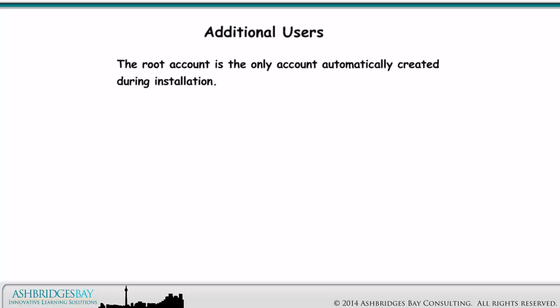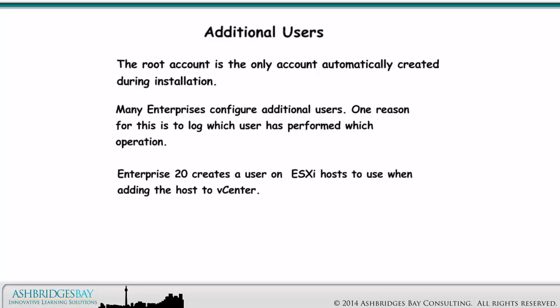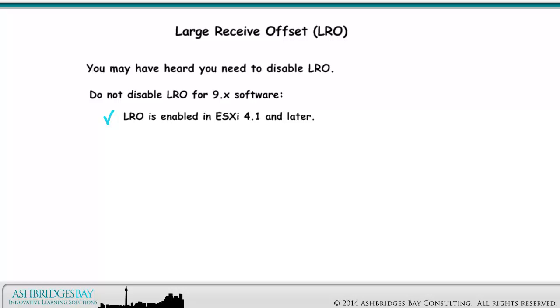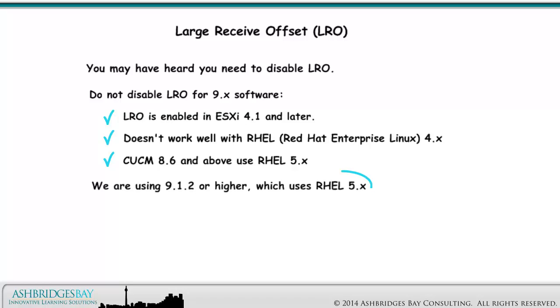The root account is the only account automatically created during installation. Many enterprises configure additional users, one reason being to log which user has performed which operation. Enterprise 20 creates a user on the ESXi host to use when adding the host to vCenter. You may have heard you need to disable LRO — do not disable LRO for 9.x software. LRO is enabled in ESXi 4.1 and later and doesn't work well with Red Hat Enterprise Linux 4.x. CUCM 8.6 and above use RHEL 5.x, and we are using 9.1.2 or higher, which also uses RHEL 5.x.